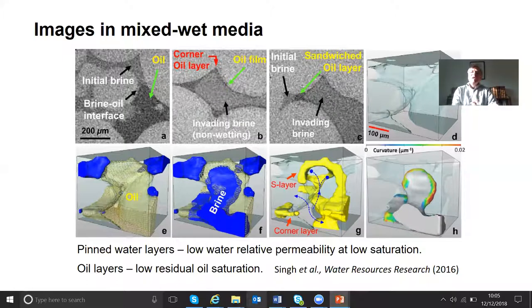These oil layers allow you to reach a low residual saturation because they retain connectivity. The brine that was injected will only be able to flow, will only have a reasonable relative permeability when the brine in the center of the pore space is connected. The wetting layers, the original wetting layers which are now pinned layers of water, retain a very small thickness and lead to low water relative permeability.